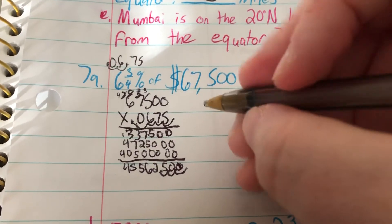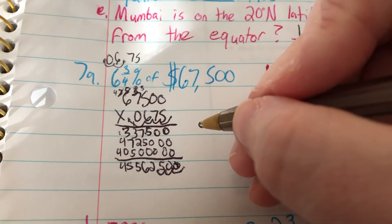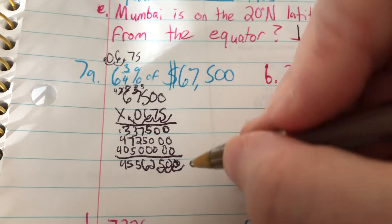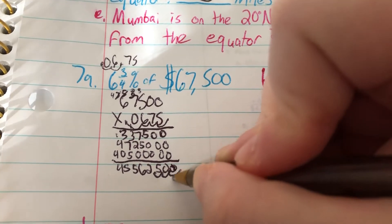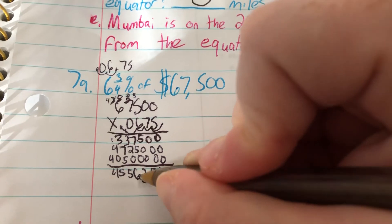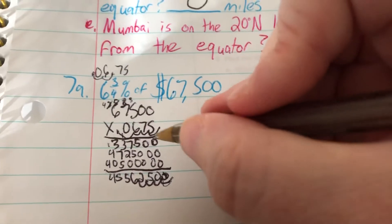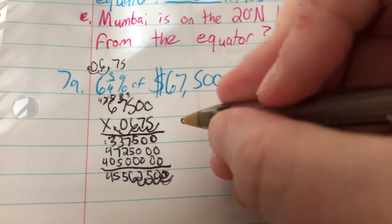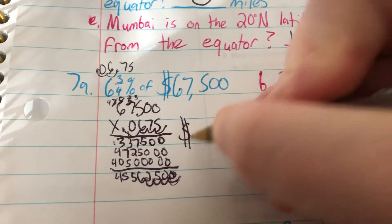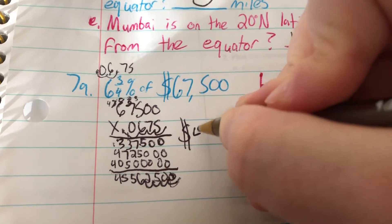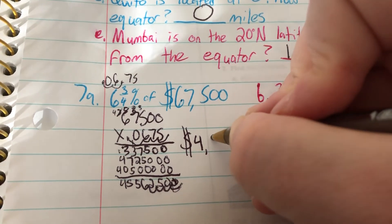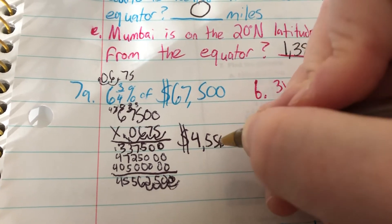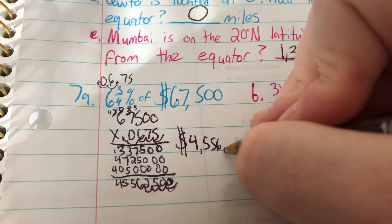5 plus 0 is 5. 7 plus 5 is 12, carry the 1. 7 plus 3 is 10, plus 5 is 15, carry the 1. 4 plus 1 is 5. 4 plus nothing is 4. And we have 1, 2, 3, 4 decimal points. So 6 and 3 fourths percent of $67,500 would be $4,556.25.